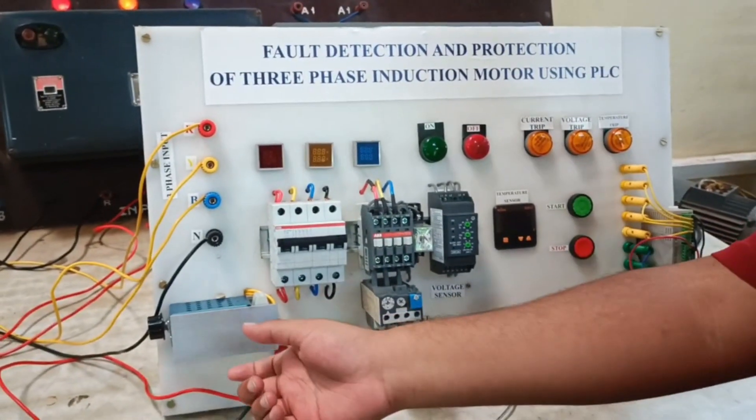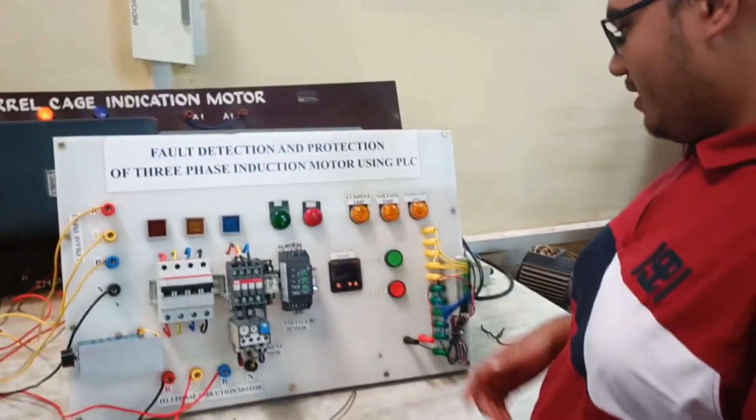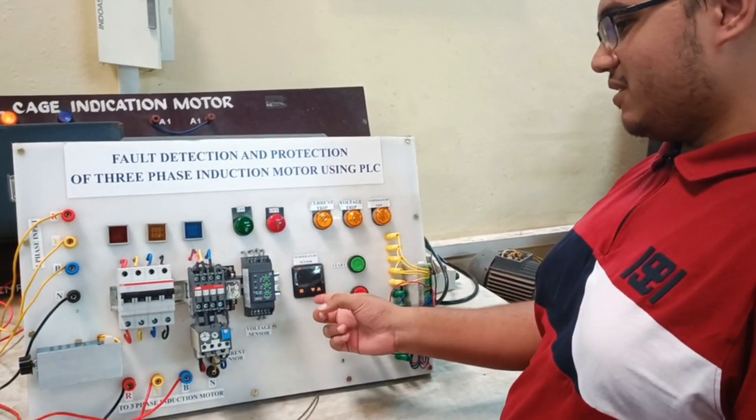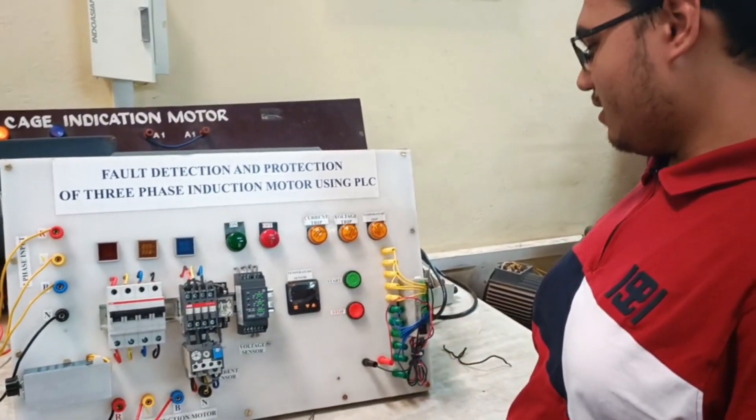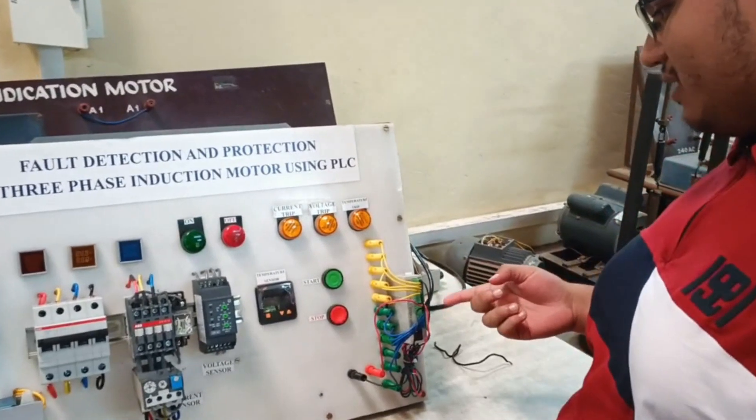We use this dimmer to generate over voltage and under voltage. This is the temperature sensor which is used to detect the temperature of the motor and finally this is the PLC.